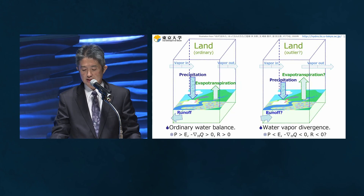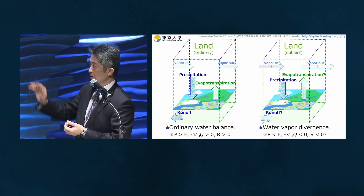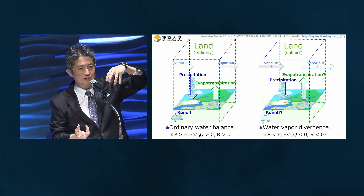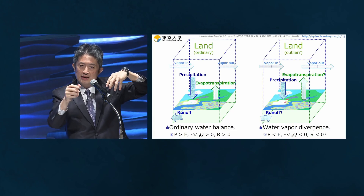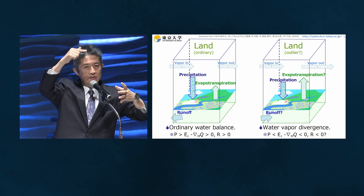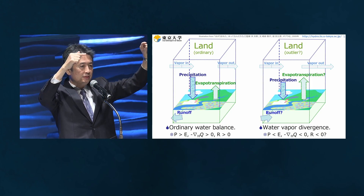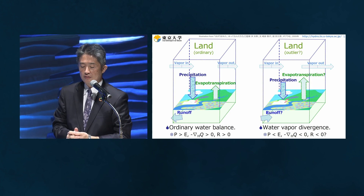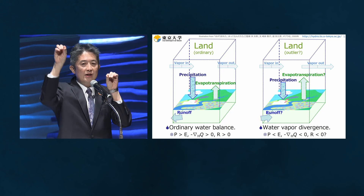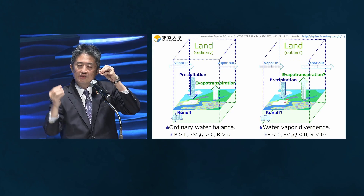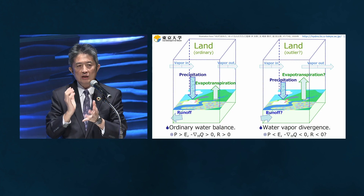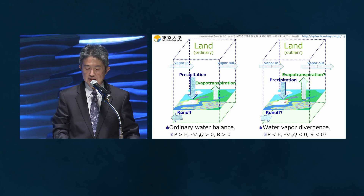I was uncomfortable to see some negative convergence over land, meaning precipitation is less than evaporation. What's happening? Let me illustrate a schematic diagram. Ordinarily over land, there is precipitation, a portion evaporates or transpirates from plants, and the residual becomes runoff. If we take a column of the atmosphere, incoming water vapor is more than outgoing. However, in some parts of the world, vapor going out is more than vapor going in, suggesting some water is evaporating over land — something unusual.